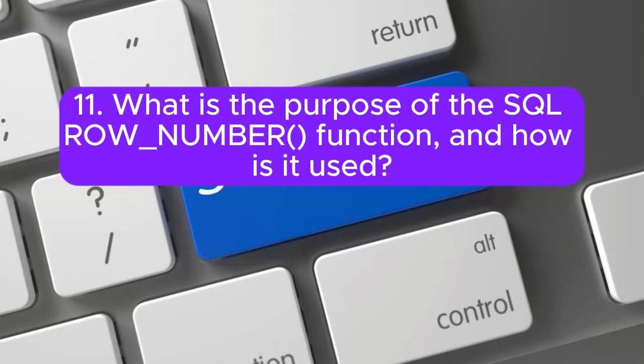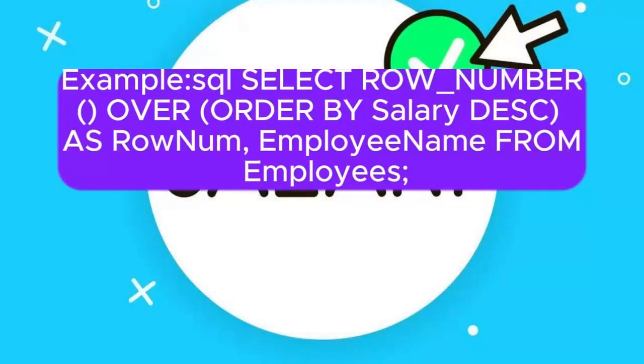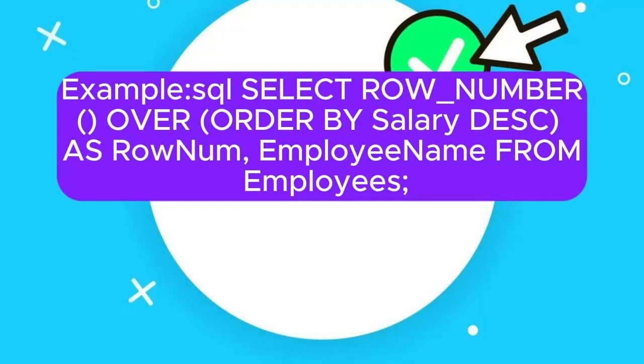Question 11: What is the purpose of the SQL row number function, and how is it used? Answer: Row number assigns a unique sequential integer to each row within a partition of a result set. Example: SELECT row_number() over (order by salary desc) as Rownum, employee_name from employees.